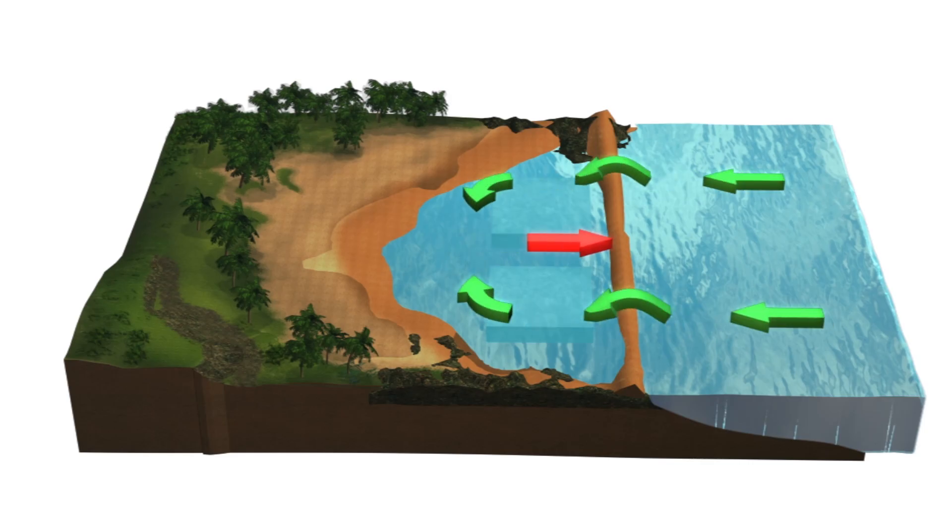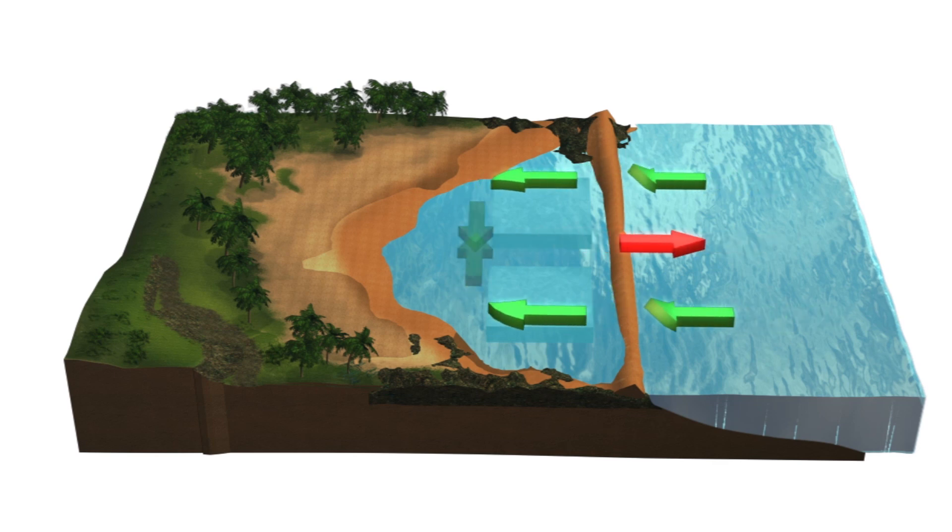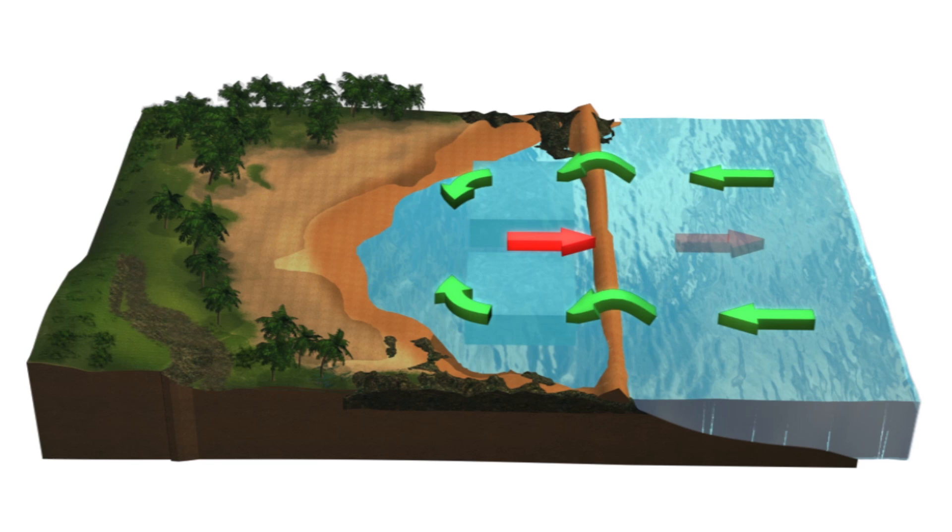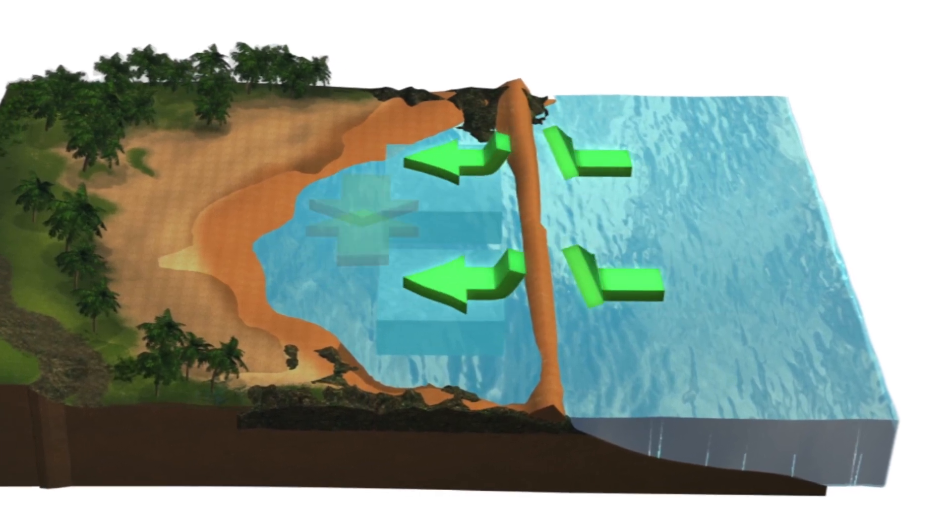Longshore currents converge and turn outward through the low water zone, at which point it becomes a rip current. Its velocity depends on the height of incoming waves and can range from 0.5 to 2.5 meters per second.